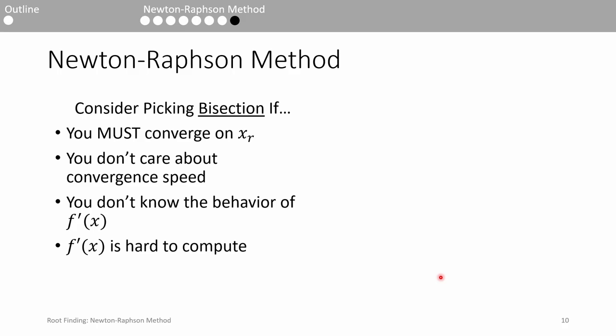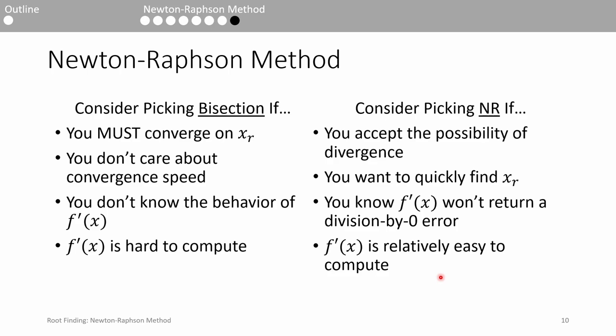On the other hand, I would pick Newton-Raphson if I wanted to quickly find the root since it's generally faster than bisection. If I know ahead of time that the derivative is relatively easy to compute, I would also use Newton-Raphson, especially if I know I won't get a division by zero error.